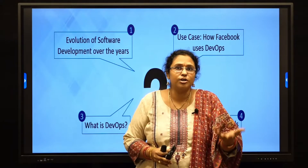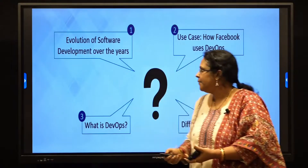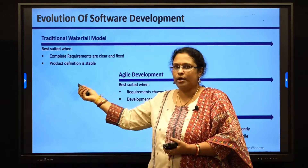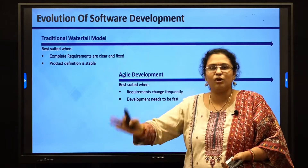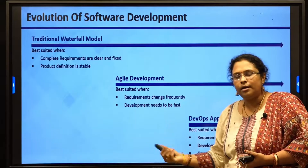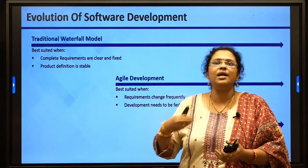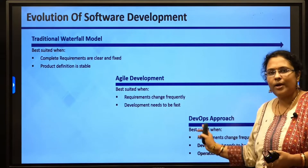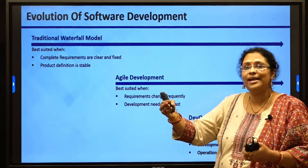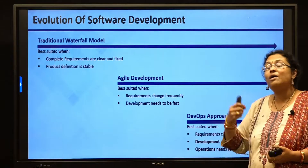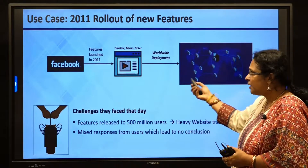DevOps is basically an enhanced version of Agile. It is a combination of two words: Development team (Dev) and Operations team (Ops). Previously we had the Waterfall model — when requirements are fixed and no mid-development modifications are needed. Then came Agile — developing in small parts allowing modifications in between. DevOps is the next enhanced version of Agile: not only developing in small parts, but also maintaining after delivery, using automated tools to develop, test, monitor, and maintain the product successfully.